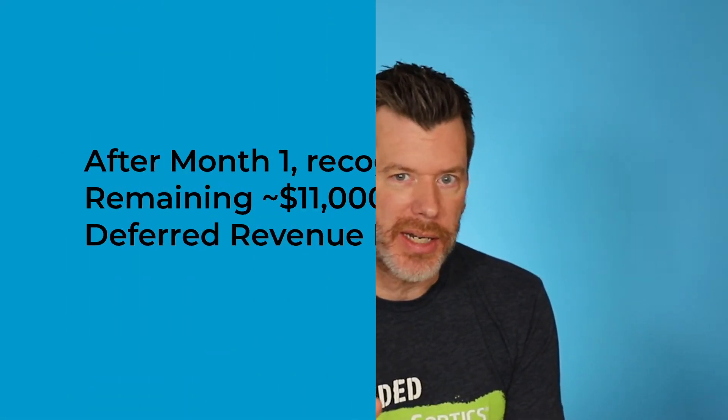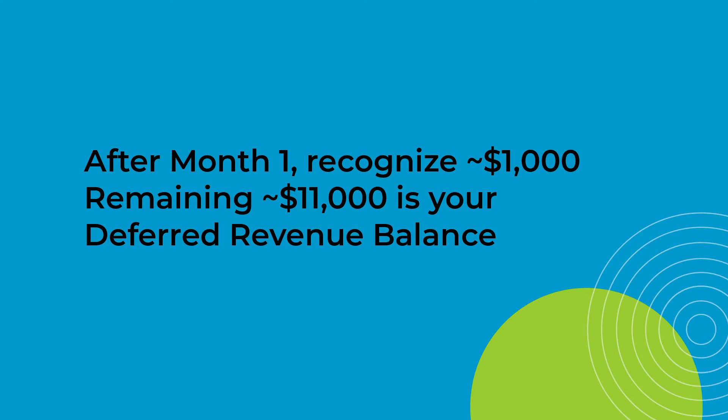In our simple example, how much revenue would we recognize after month one? Well, this is easy. 12-month contract, $12,000 — so after month one we'd recognize about $1,000 in revenue, and the remaining $11,000 we put into a liability account under deferred revenue, which is sometimes called unearned revenue.